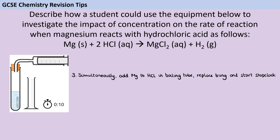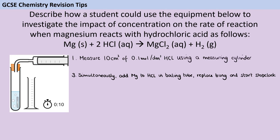Before the reaction, we need to measure the acid and the magnesium, naming the equipment we use. I would start by saying I'll measure 10 cm³ of 0.1 molar hydrochloric acid using a measuring cylinder. It's absolutely fine if you've said a set volume or the same volume every time — there's no one specific volume required. Likewise, naming a concentration saves time but isn't strictly required. Then for the magnesium, I'm going to measure 0.5 g using a balance. The exact mass isn't important — 0.2 g or 1 g is fine — as long as you haven't suggested an unreasonable amount.